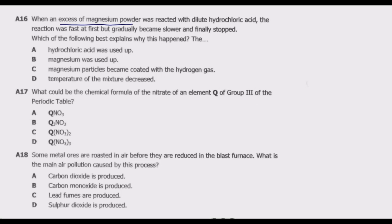We know that magnesium powder is in excess. Because of this, magnesium cannot be used up, so option B is ultimately incorrect.